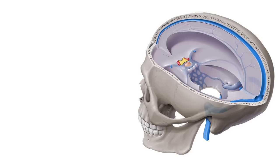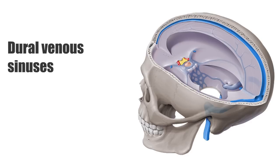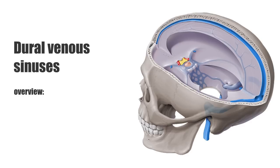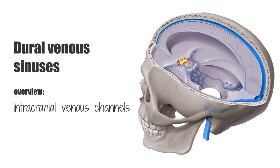Before we look at the petrosal sinuses, let's first define what we mean when we talk about the dural venous sinuses. They are basically intracranial venous channels that drain venous blood from the brain and the meninges to the internal jugular veins. They are situated between the endosteal and meningeal layer of the dura mater and their walls are lined with an endothelial lining.